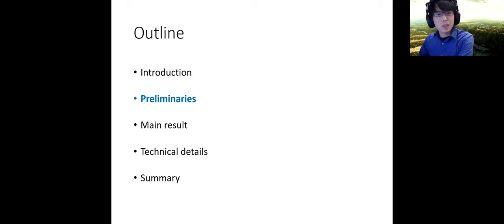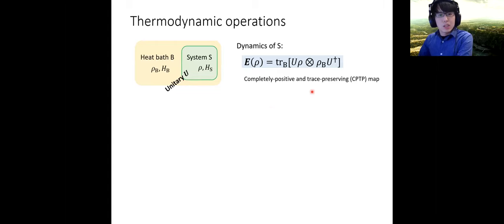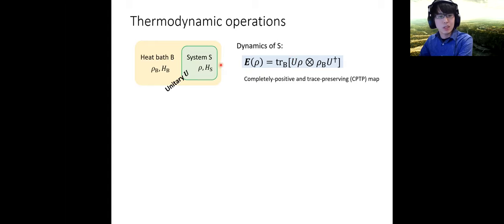I will talk about some fundamental concepts related to our approach. We can imagine that there is a system S and a heat bath B. The entire operation is performed on the entire system, and the reduced dynamics of the system is given by tracing out the bath degrees of freedom. This is called a CPTP map — a completely positive and trace-preserving map — and is a very general characterization of non-unitary dynamics. The entire system obeys unitary dynamics, but looking at only the system, this dynamics can be non-unitary in general.